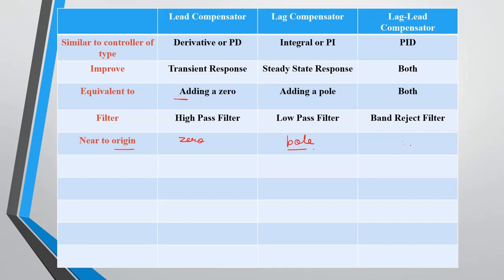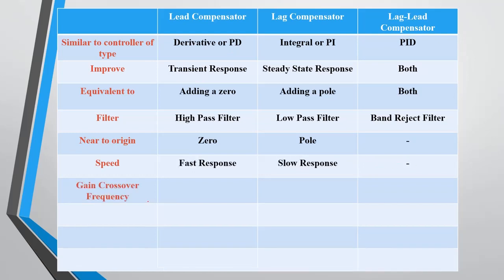For lead compensator, since it is equivalent to adding a zero, the zero is near the origin. For lag compensator it is a pole, and for lag-lead it depends on the value of the compensator added. The PD controller improves transient response, decreasing rise time and improving speed. For lag compensator speed is not improved — response is comparatively slow. Lag-lead gives a mixed type of response.